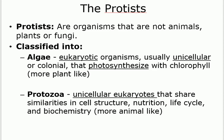Algae are unicellular (most of the time), have chloroplasts and chlorophyll, and can do photosynthesis. They are autotrophic — they can survive on their own using sunlight. Protozoa are also unicellular and similar in some ways, but they are closer to animals and are heterotrophic.